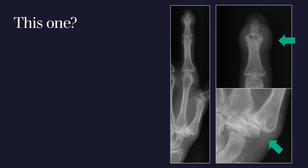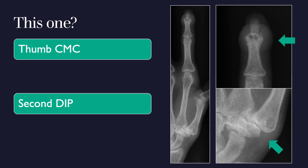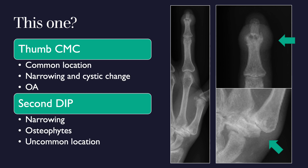In the next case we have an image of the thumb and a finger showing two involved joints: the carpometacarpal joint of the thumb and the second distal interphalangeal joint. The thumb CMC is a common location for osteoarthritis; there is narrowing and cystic change, so I'd be comfortable calling that OA. However, the second distal interphalangeal joint shows narrowing and osteophytes, and the DIP joint is not a very common location for osteoarthritis.